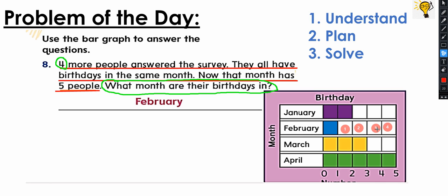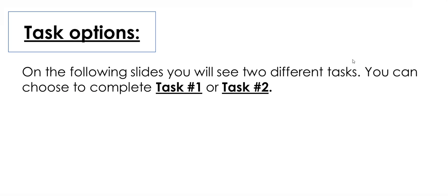Why not March? Because if we add four people - one, two, three, four - we're gonna have one, two, three, four, five, six, seven people, and we need to find only five people in the same month. That's why it is February.